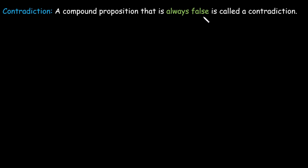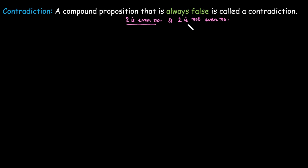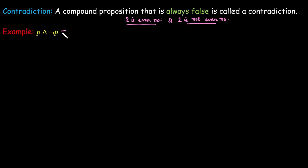The next term is contradiction. A compound proposition that is always false is called a contradiction. For example, 'two is an even number AND two is not an even number' is completely incorrect — always false. No matter whether the proposition is true or false, the overall result is false. So, if you take any proposition, its negation, and put AND between them, that is always a contradiction.